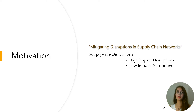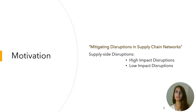In this study, I'm interested in mitigating disruptions in supply chain networks. The question is: what are the main risks facing the supply chain, or what types of disruptions may happen? I categorize them into two types: high-impact disruptions — including natural disasters, widespread labor shortages, and impacts of the COVID-19 pandemic — and low-impact disruptions, including price fluctuations, transportation failures, and product recalls.